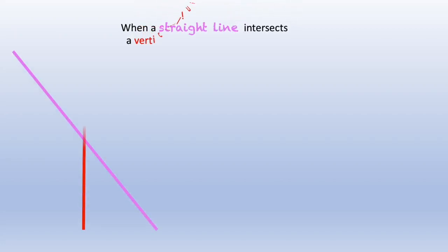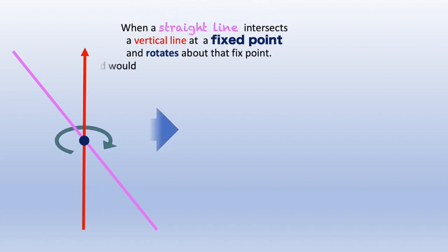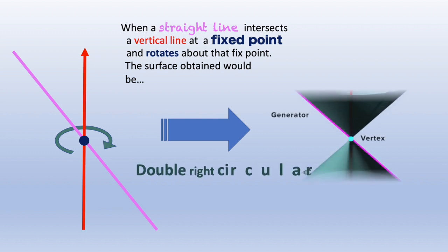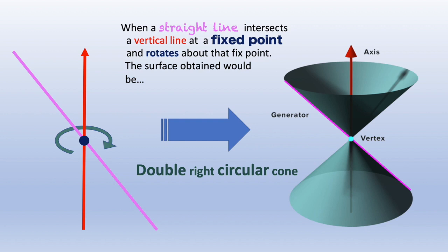When a straight line intersects a vertical line at a fixed point and rotates about that fixed point, the surface obtained would be a double right circular cone.